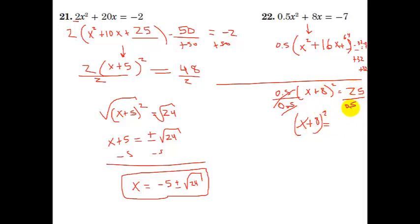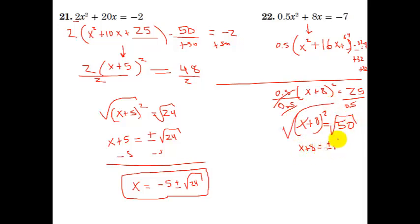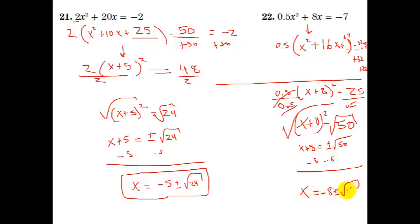Dividing by 0.5 is the same as multiplying by 2, so 25 divided by 0.5 gives 50. We get (x + 8) squared equals 50. Take the square root of both sides: x plus 8 equals plus or minus square root of 50. Minus 8 on both sides — final answer: x equals negative 8 plus or minus square root of 50.